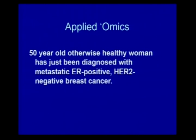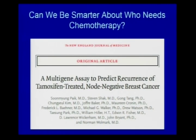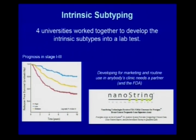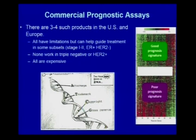Applied omics: a 50-year-old otherwise healthy woman just diagnosed with metastatic ER-positive HER2-negative breast cancer. There's a multi-gene assay called the Oncotype DX that we use to predict recurrence in tamoxifen-treated node-negative breast cancer. Women who have a low recurrence score can get away with anti-estrogen therapy alone; higher scores indicate chemotherapy is also needed. There are also commercial assays for intrinsic subtyping for prognosis in early breast cancer. They're all expensive, all have limitations, but also have some worth.